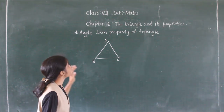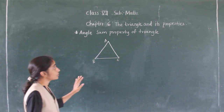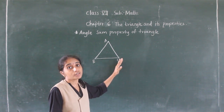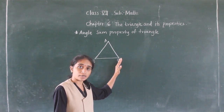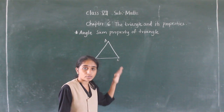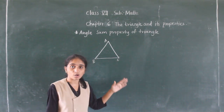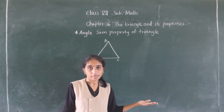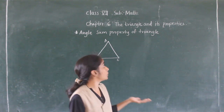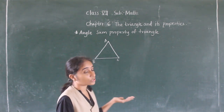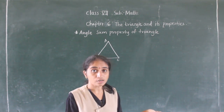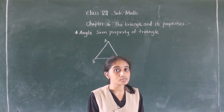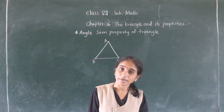So what is the angle sum property of triangle? The sum of three angles of a triangle is 180 degrees. You have already learned that the sum of the angles of a triangle is 180 degrees. This is the angle sum property of a triangle.